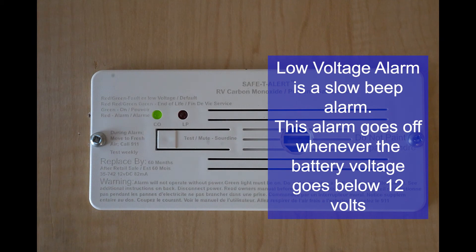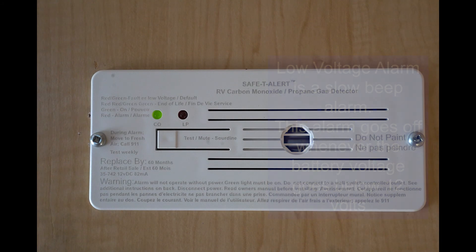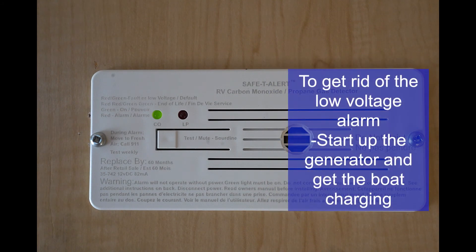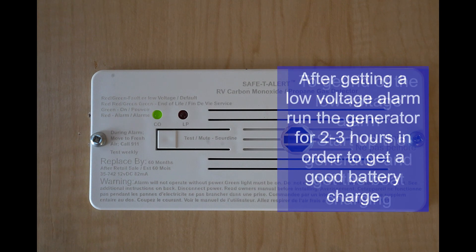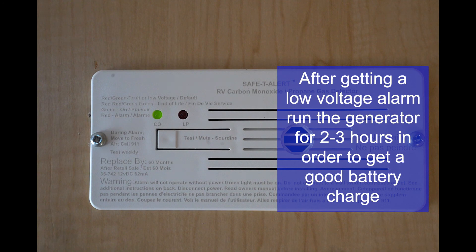It's a single beep, then about 10 seconds goes by and it will beep again. That just lets you know that you need to start up your generator and get your boat charging for your batteries to get back above 12 volts. If you ever get the low voltage alarm out on the lake, do not be alarmed. Just start your generator up, let it charge for about two to three hours to get a good battery charge, and then you can shut your generator back off again.